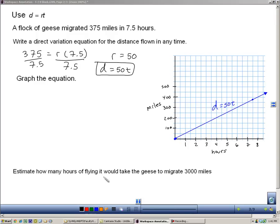Now we have to estimate how many hours of flying it would take the geese to migrate 3,000 miles. We could look at the line, but our graph only goes up to 500 here, and 3,000 would be way off. But one thing we can do is use the direct variation. We want to find how many hours it would take if they went 3,000 miles. So I'm going to plug 3,000 in for my distance. And then solve for the time. Solve for t.